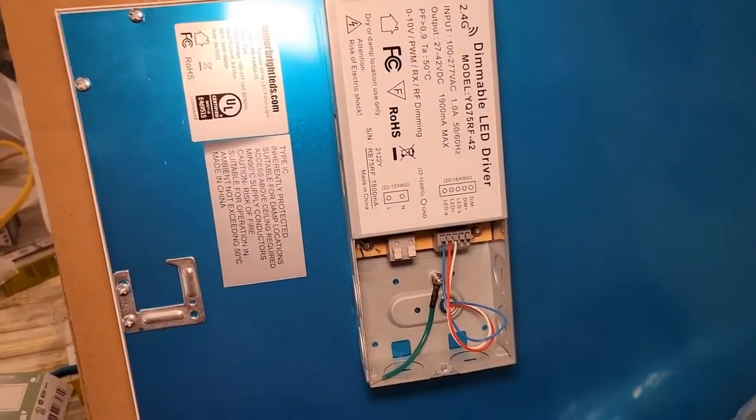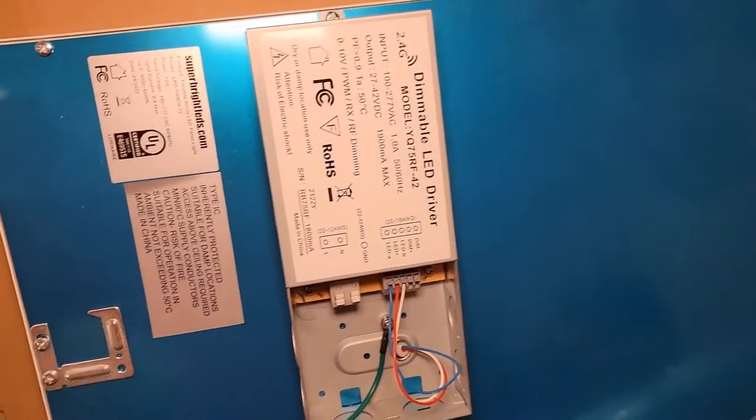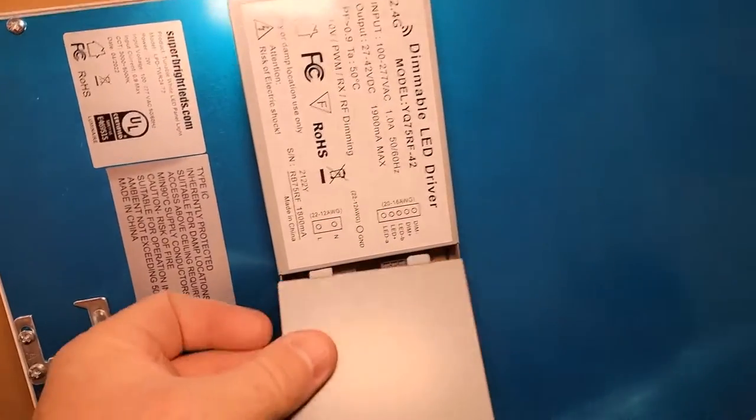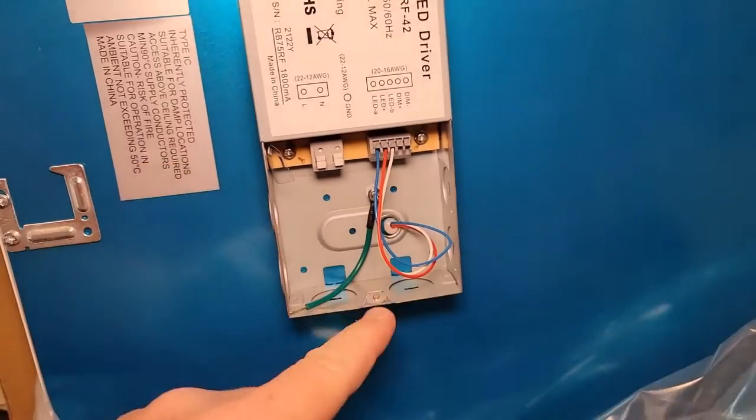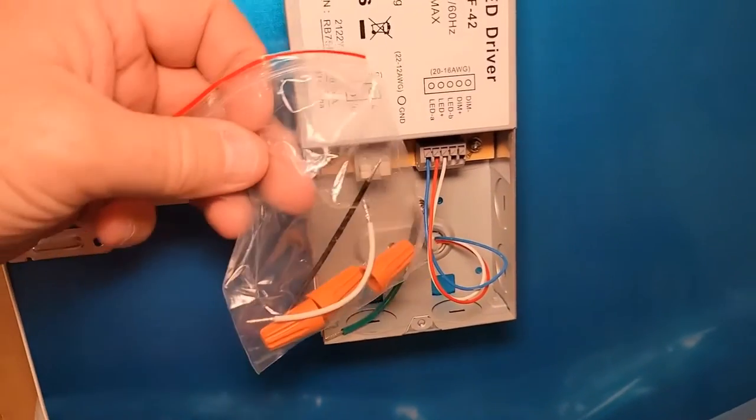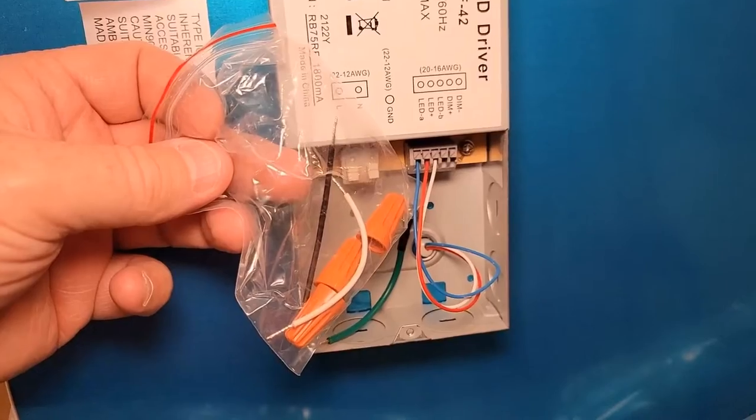On the back side of these super bright LED panels, you take this little cover off. It's got a Phillips screw. Inside here you get this bag. It's got wire nuts and two little extenders.